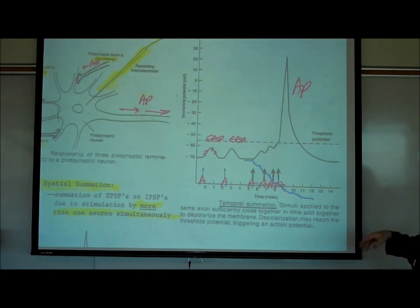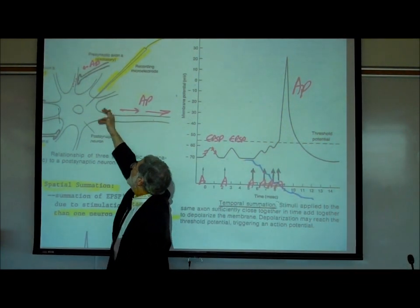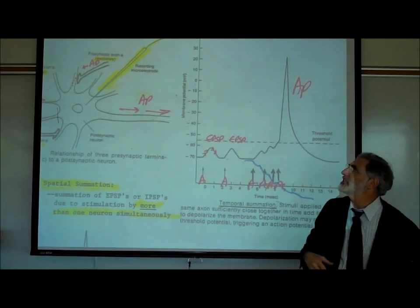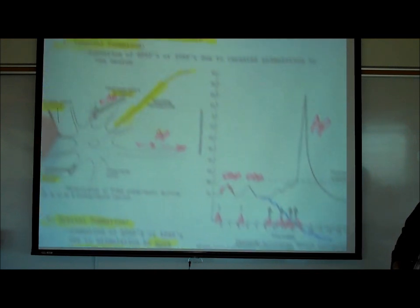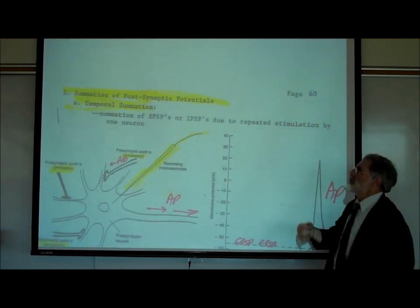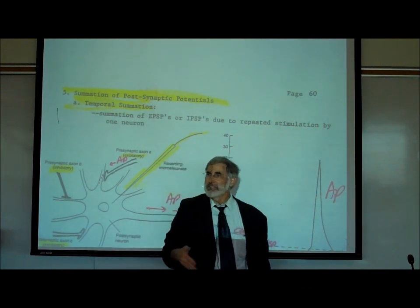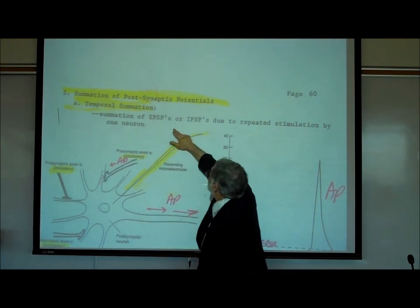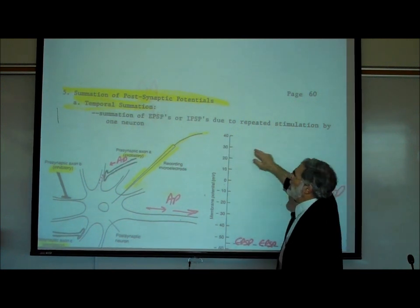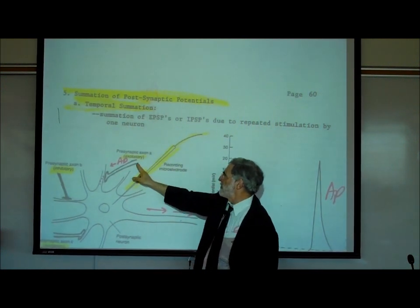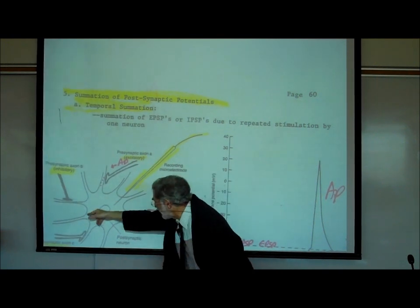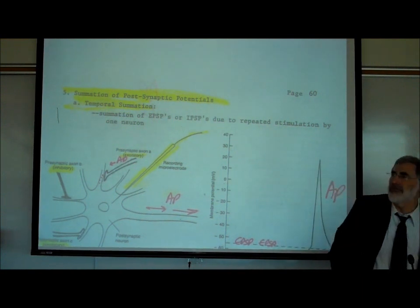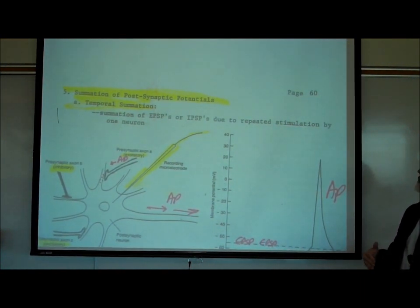When one neuron repeatedly affects another neuron, that is called temporal summation. The word temporal means in time — summation of EPSPs or IPSPs due to repeated stimulation by one neuron. If neuron A repeatedly releases its chemical, we get an additive effect — that's temporal summation.